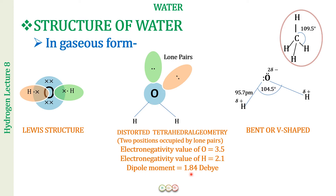To summarize the gaseous form: water has a bent shape with two lone pairs of electrons on oxygen. The bond angle is 104.5 degrees — less than the 109.5 degrees in methane — due to lone pair repulsions. The geometry is a distorted tetrahedral, the hybridization is sp3, and the dipole moment value is 1.84 Debye.